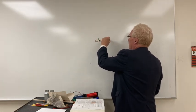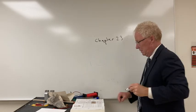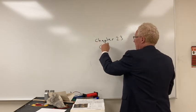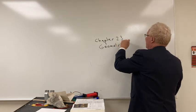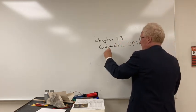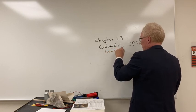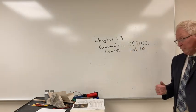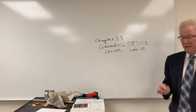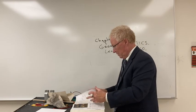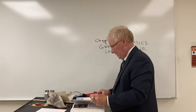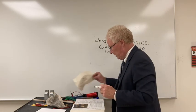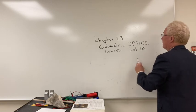We are on Chapter 23, which we call geometric optics. This includes lenses and will be part of lab 10. For Chapter 24, what we do next will be wave optics, which will be labs 9 and 9A. This lab is strictly on lenses and reflection. To get a little further, what we're going to use is we take light to travel as what we call a ray.